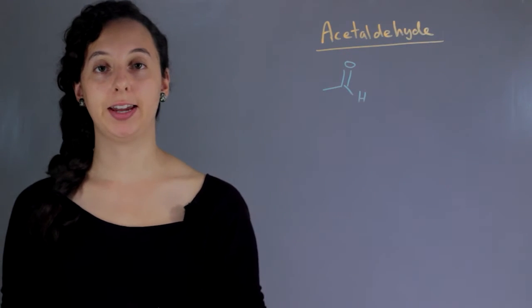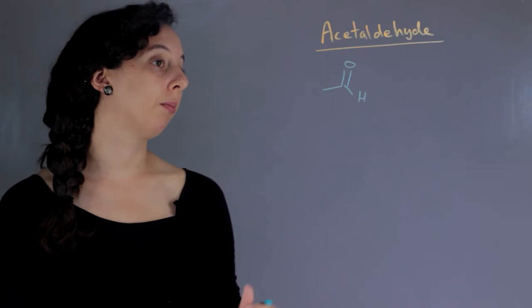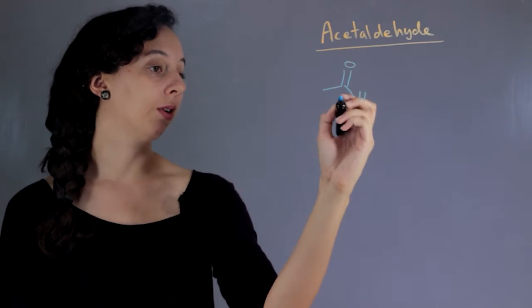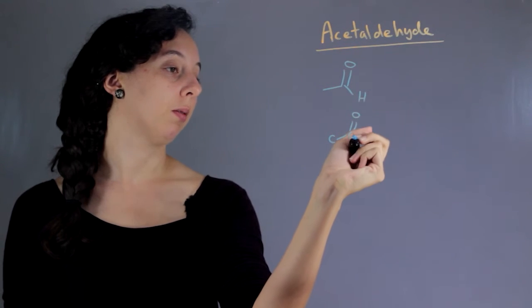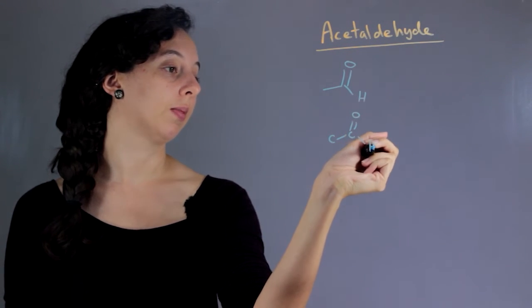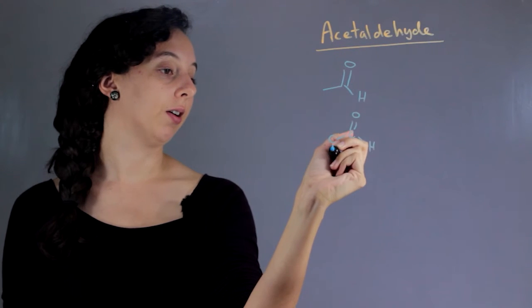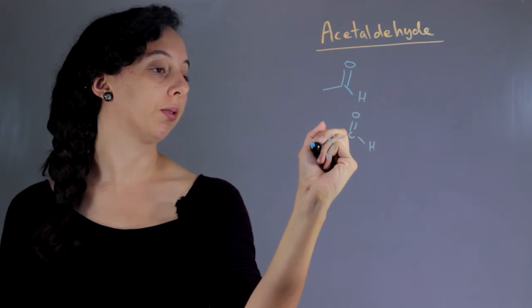So if we break that down into what it means, each end or corner is a carbon. So it looks like this. You have a carbon double bonded to an oxygen and a hydrogen, and then on this end just a carbon bonded to three hydrogens.